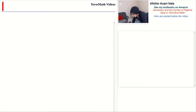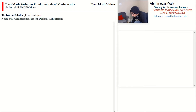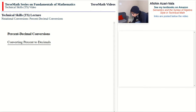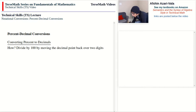Hello everyone and welcome to the next video in the series. This is a technical skills video on the topic of conversions between percentage and decimals. We begin with how we go from percent to decimal, and after this we'll talk about how to go from a decimal to percentage. For percent to decimal, we divide by 100 by moving the decimal point back over two digits.